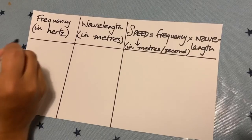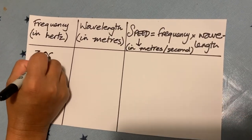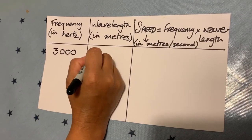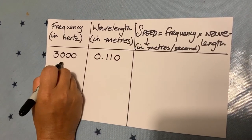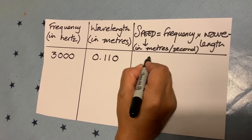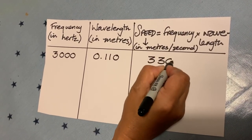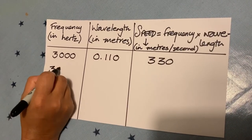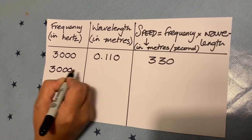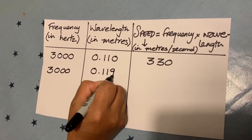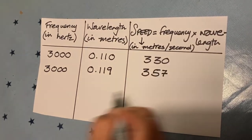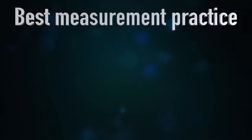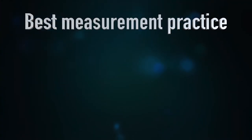Let's write down our results. Here's the frequency in Hertz from YouTube, and the wavelength we measured in millimetres — written now in metres. Multiply these two together to get our speed in metres per second. We got two sets of results because we had three points; multiply together again to get a second speed of sound value. It's always best measurement practice to do more than one test.